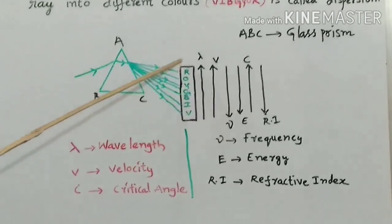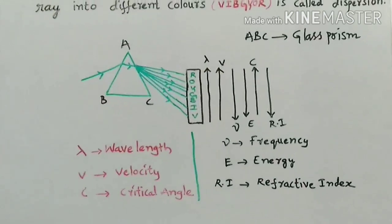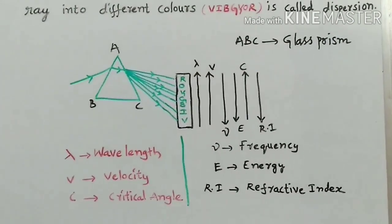Violet to red color. Here, wavelength, velocity of light, critical angle increase from violet to red.